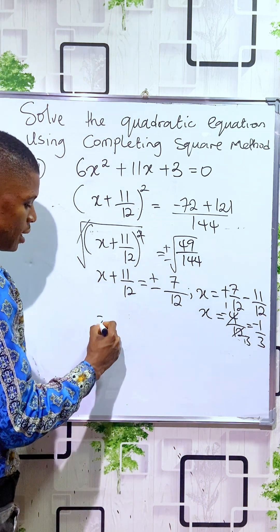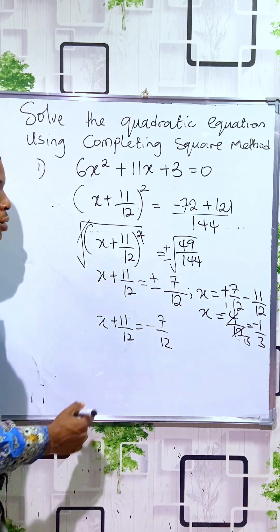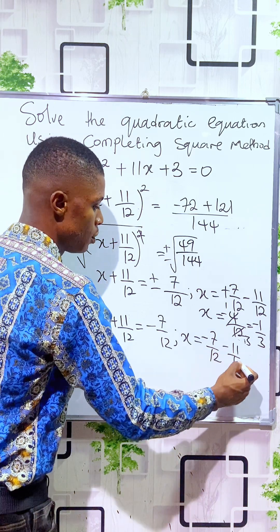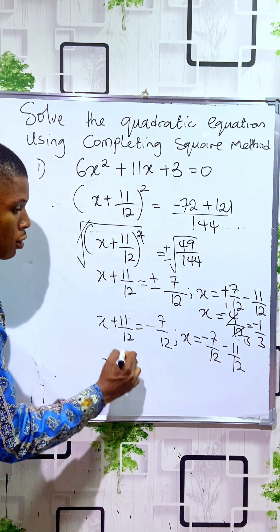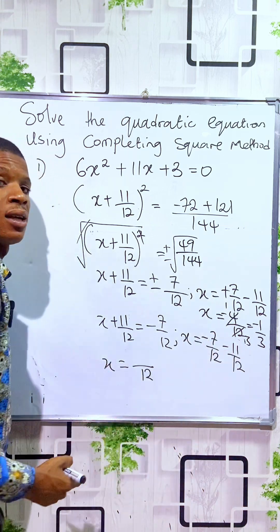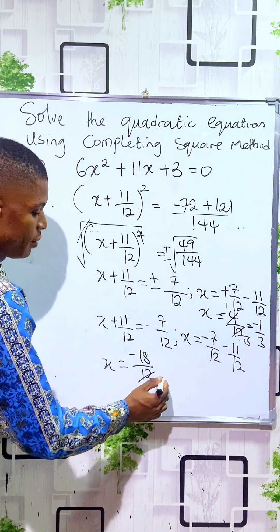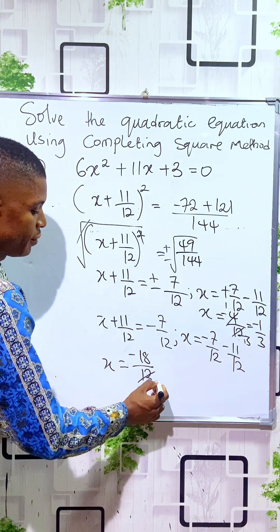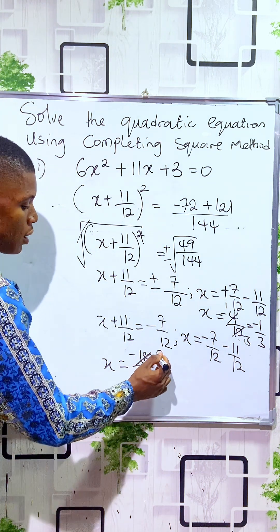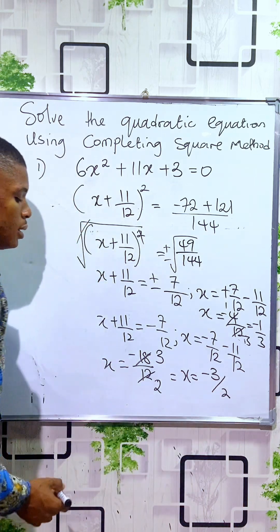For the negative solution: x + 11/12 equals minus 7/12. When 11/12 crosses to the other side, it becomes negative, giving x equals minus 7/12 minus 11/12. Both have a common denominator of 12, so minus 7 minus 11 is minus 18, giving x equals minus 18/12. Simplifying, 6 divides into 18 to get 3, and 6 divides into 12 to get 2, so x equals minus 3/2. That is the solution.